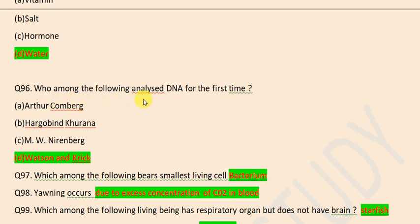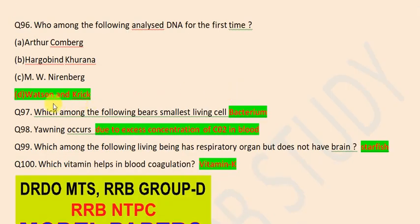Who among the following analyzed DNA for the first time? Watson and Crick. Which among the following bears the smallest living cell? Bacterium. Yawning occurs due to excess concentration of CO2 in blood.